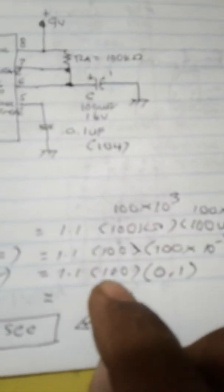What's left on the left side is just 100. Moving to the left, 10 to the negative 3 becomes 0.1. So 100 times 0.1 times 1.1 becomes 11 seconds.